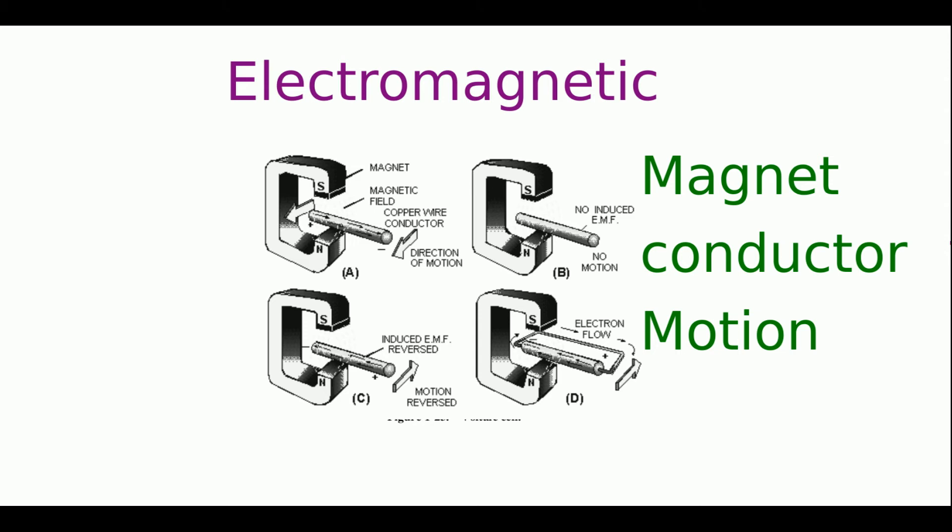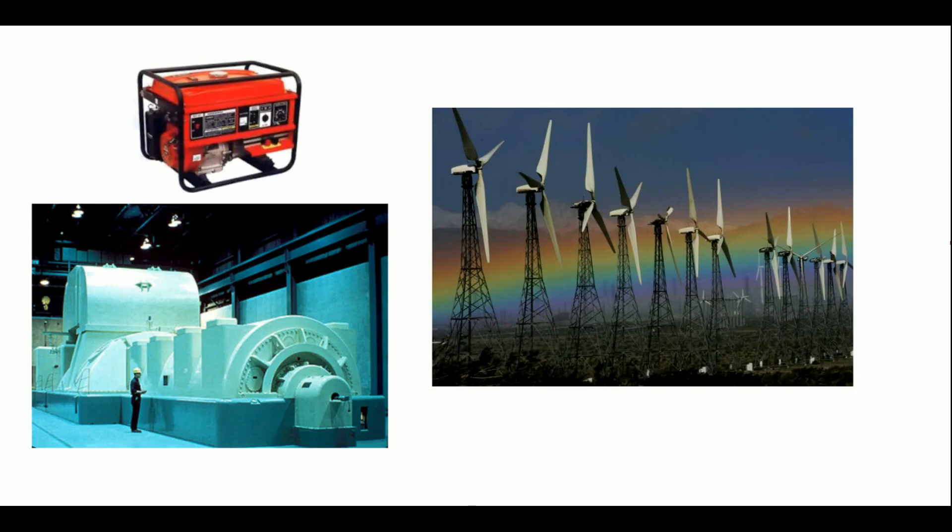The three elements that are required to create power via electromagnetic way are a conductor, a magnet, and relative motion between those two. All generators, Hoover dams, and even windmills work on this principle, because they just drive a generator.